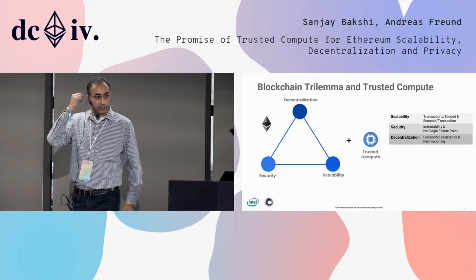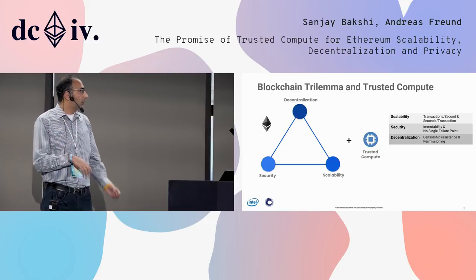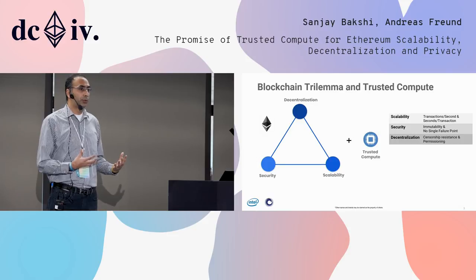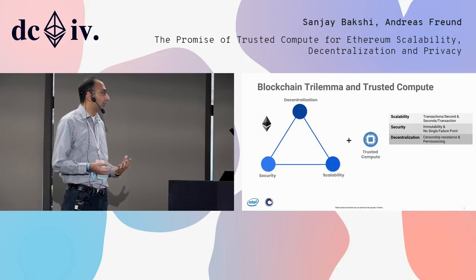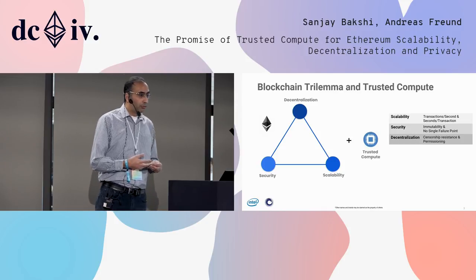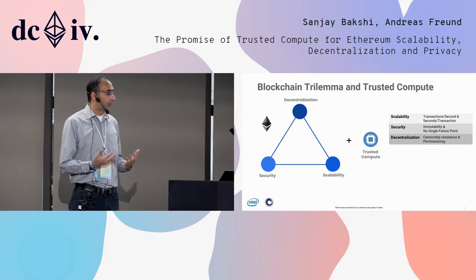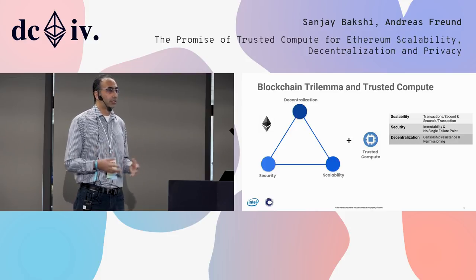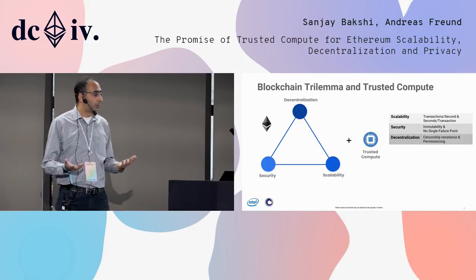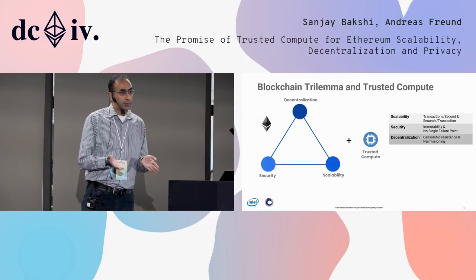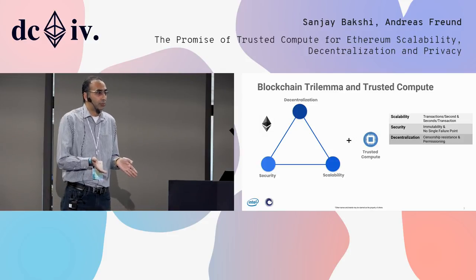A lot of the conversation around decentralization is that if you rely on trusted compute, you let go of decentralization. We would like to have a conversation around that, because if you take trusted compute, the way I view decentralization — from reading various articles on sharding and similar topics — it's about two properties: censorship resistance and permissioning. And trusted compute doesn't remove either of these properties.